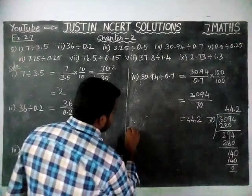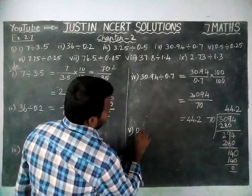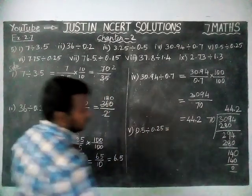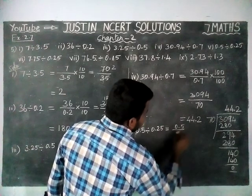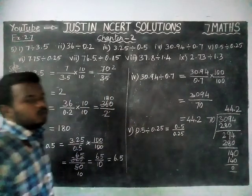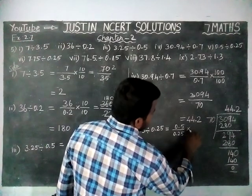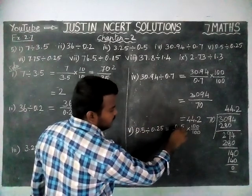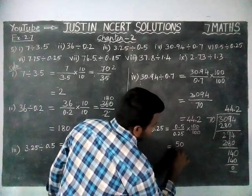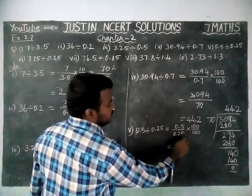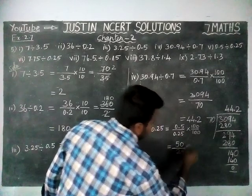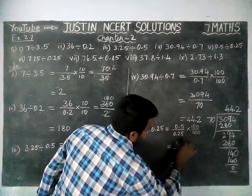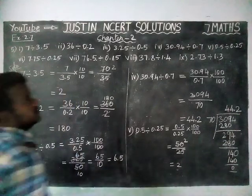5th question: 0.5 divided by 0.25 is equal to 0.5 divided by 0.25. In the denominator we have 2 decimal places, so we are going to multiply by 100 over 100. Here we have only 1 decimal place, so we add 1 zero, giving 50. Here we have 2 decimal places, so we move the decimal part, giving 25. Now 50 divided by 25: 1 × 25 is 25, 2 × 25 is 50. So the answer is 2.